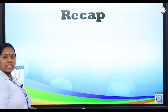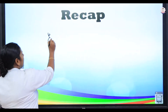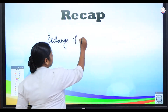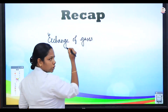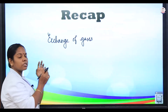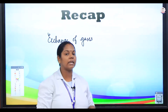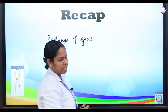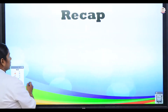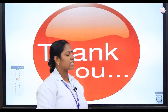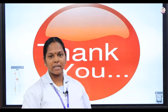Let us recap what we discussed, children. We discussed how the exchange of gases takes place — through root hairs and lenticels — and we found out the difference in how respiration takes place in plants versus animals, and later we compared photosynthesis and respiration. This is the assessment related to this topic, children; just go through it. In the description we have attached the study material, assessment, and question bank for this lesson. Go through it. Thank you, children.